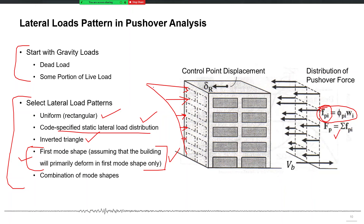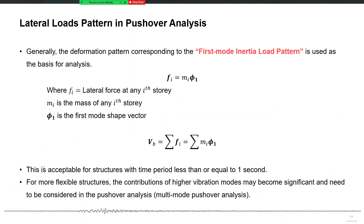The second mode shape pattern may look like this: the first few stories will have a force towards the right-hand side, but the bottom few may have a force towards the left-hand side. This pattern deforms your building in the second mode shape. Similarly, for the third mode shape pattern, the first few stories go right, the middle goes left, and the bottom again goes right. However, for conventional low- to mid-rise buildings, only the first mode shape pattern is mostly used. Nowadays we don't use the uniform or any other load pattern — the first mode shape load pattern is the most commonly used.